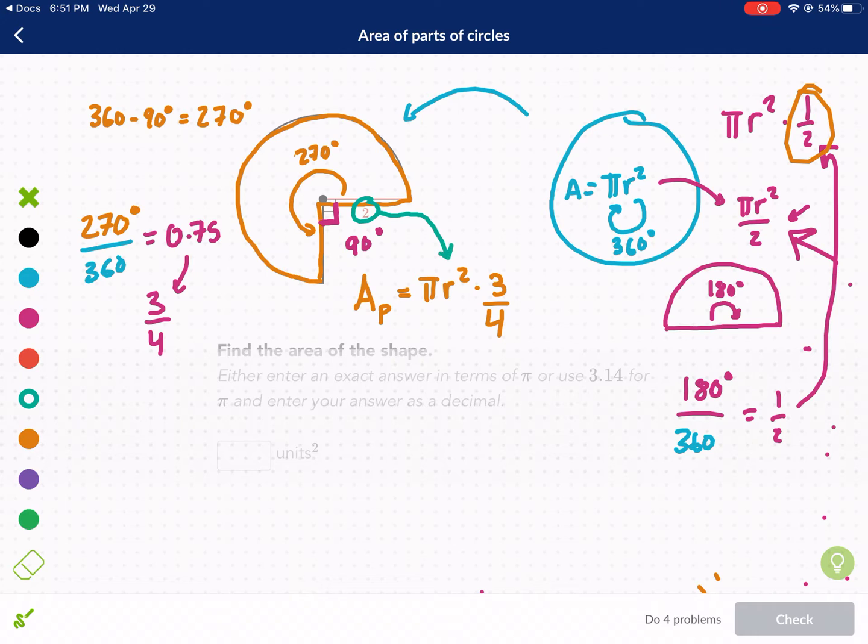We're going to plug in this 2, that's our radius, in for the r. So A_P equals pi times 2 squared times 3 over 4. Don't multiply pi times 2 and then square the result, that's going to yield you the wrong answer. So you get pi times 4 times 3 over 4. Now what I like to see here is we have a 4 and we have a divide by 4, so those just completely cancel, leaving us with 3 pi. I'm going to type in 3 pi.